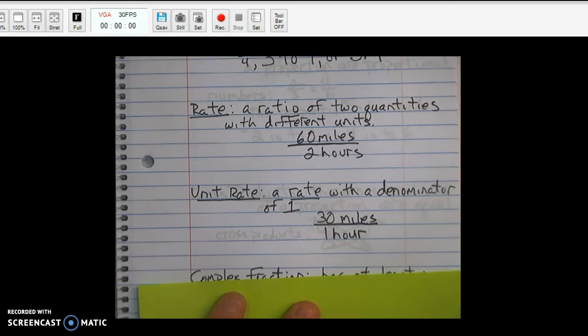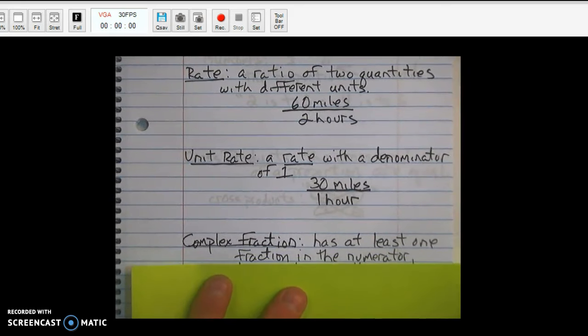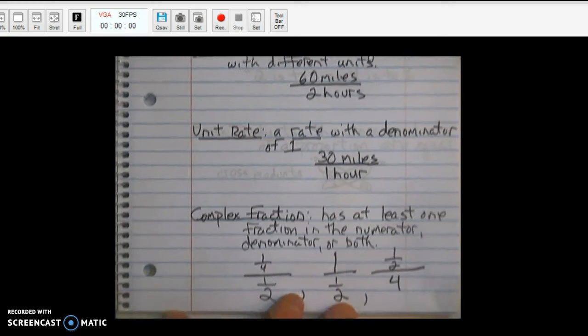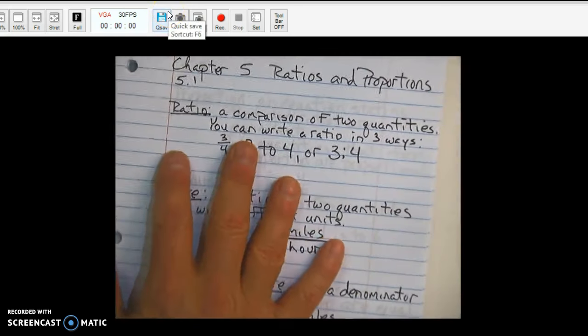The last phrase, I'm sorry, key term for 5.1 on this page is complex fraction. A complex fraction. A complex fraction has at least one fraction in the numerator, denominator, or both. Okay. I'm going to show you the examples. 1 fourth over 1 half. Or, as a ratio, 1 fourth to 1 half. 1 to 1 half. Or, 1 half to 4. Okay. Okay. So, that's your first page.